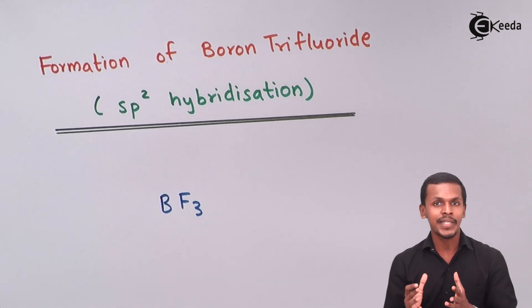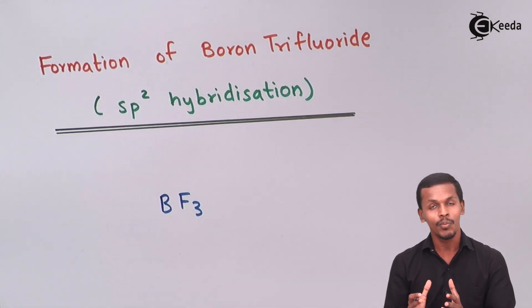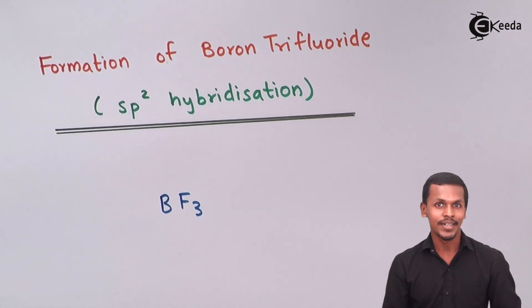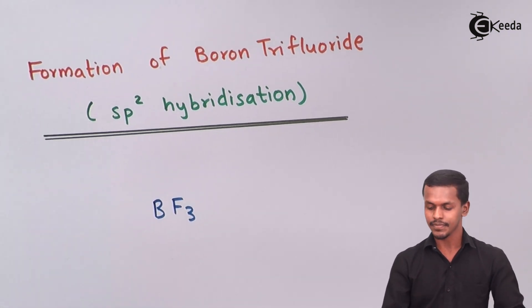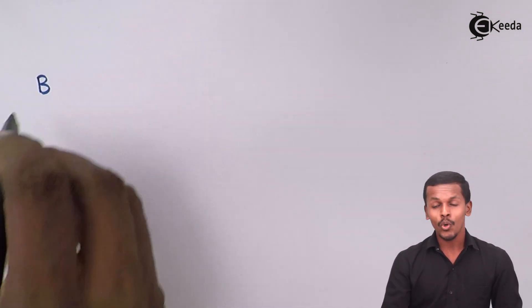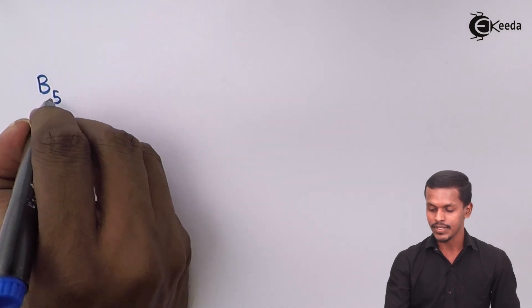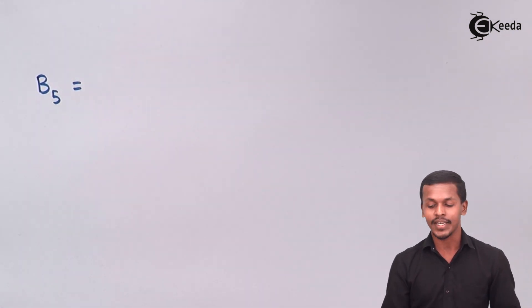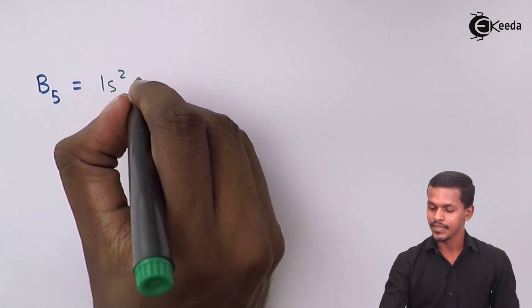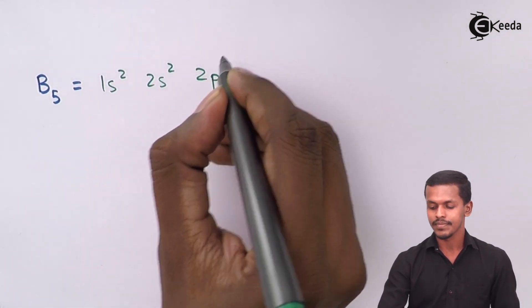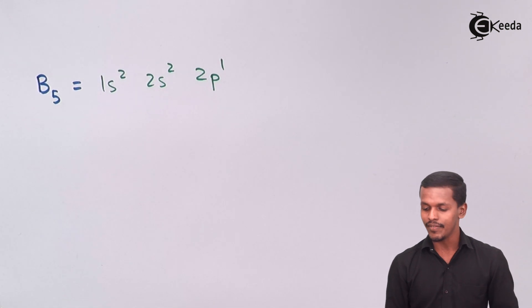Let us understand the electronic configuration of boron and the fluorine atoms involved. Boron has an atomic number of 5, so its electronic configuration can be written as 1s2, 2s2, and 2p1.